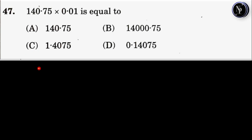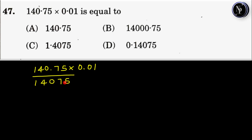Here we have 140.75 into 0.01. On multiplying ignoring the decimal, we get 14075. To place the decimal point, we need to count the number of digits to the right of the decimal point in both numbers. Here we have 1, 2, 3, 4 digits. So we put the decimal point after 4 digits from the right: 1, 2, 3, 4. So the required answer is 1.4075, which is answer option C.